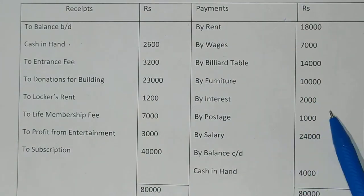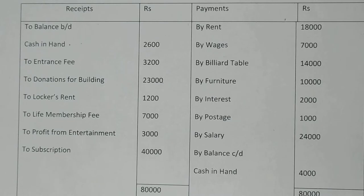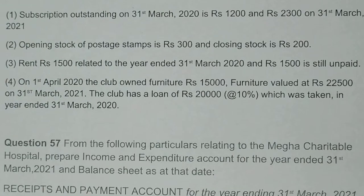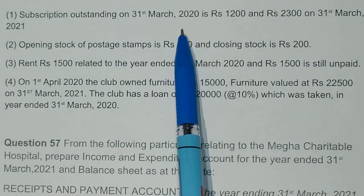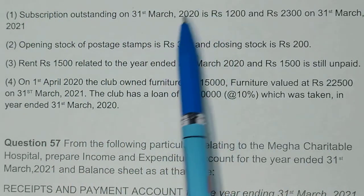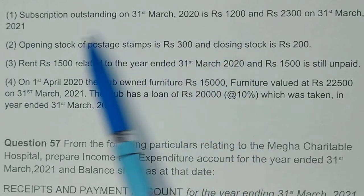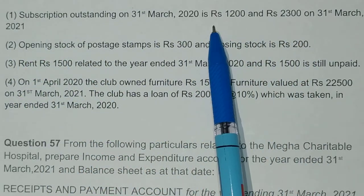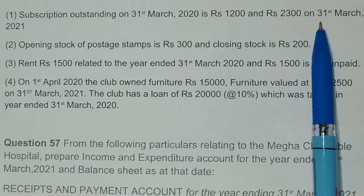Interest, postage, and salary will be added to the income and expenditure account. The balance carried down — include or not include. After that, look at the additional information. It tells us that as of 31st March 2020, certain amounts were outstanding at the opening time, and the end-of-year amounts were also given — so the opening will be less and the closing will be added.